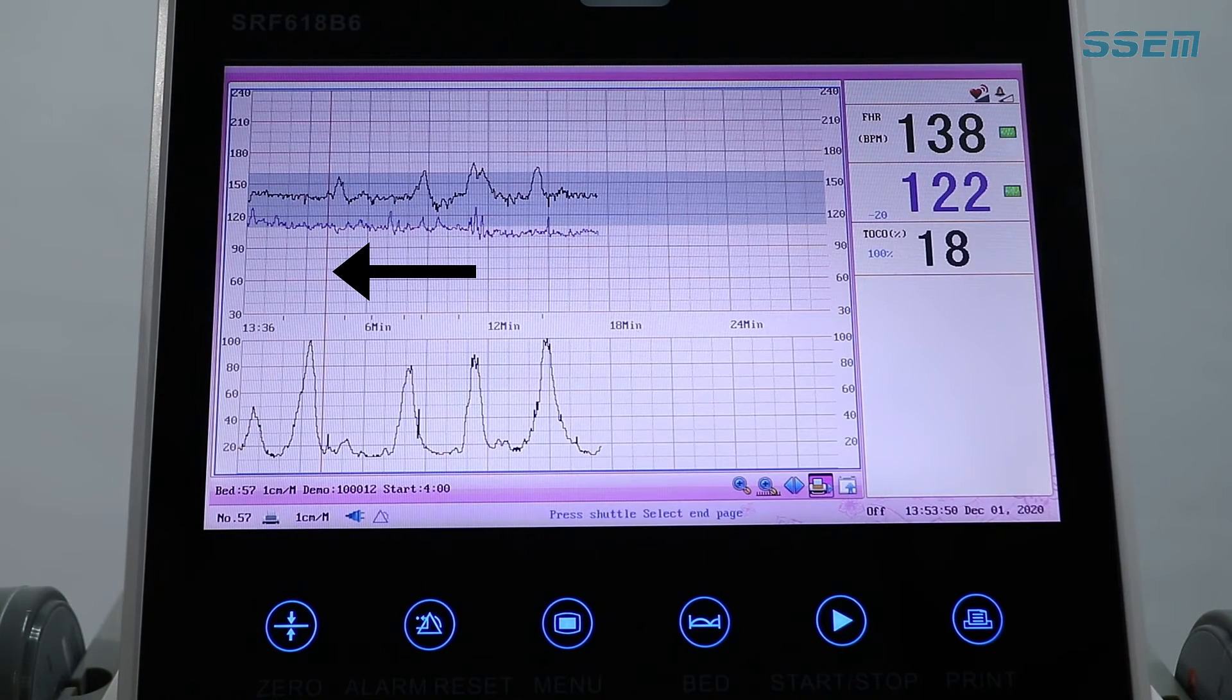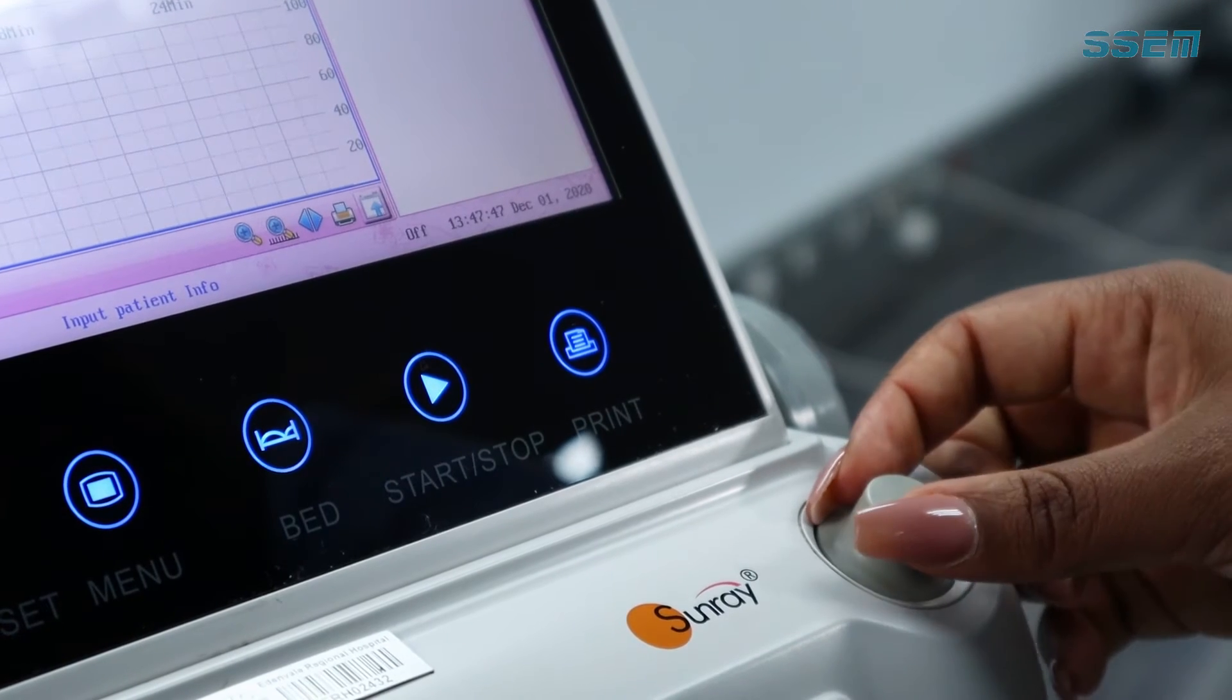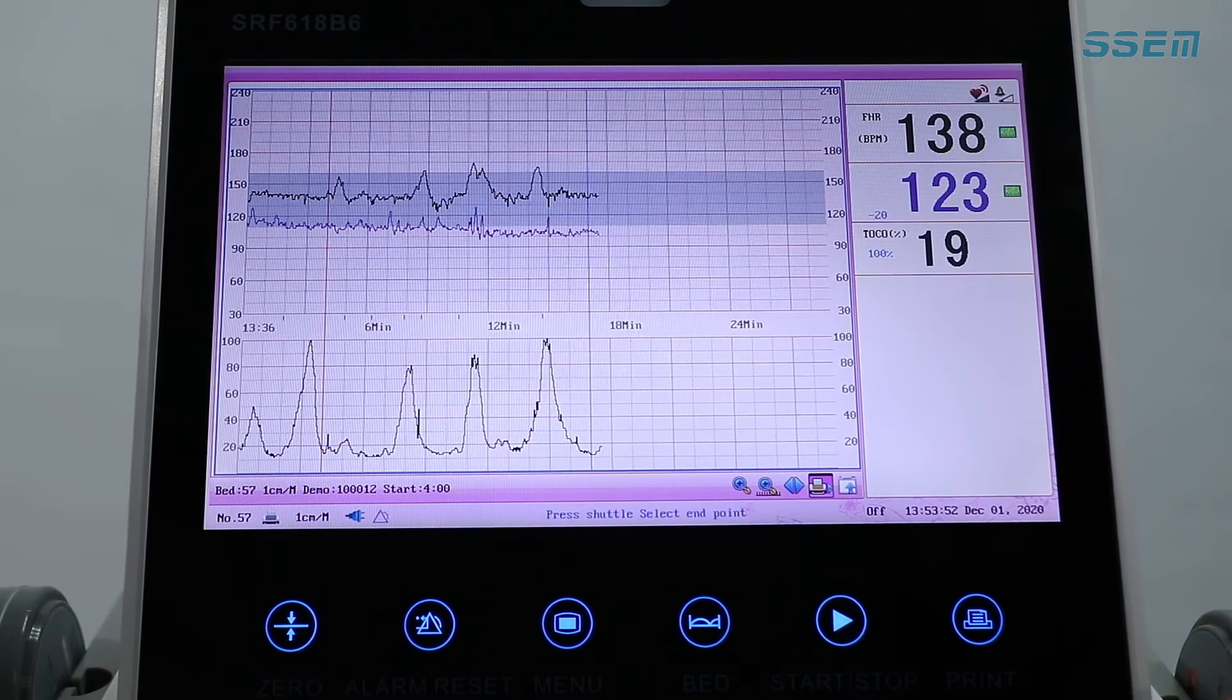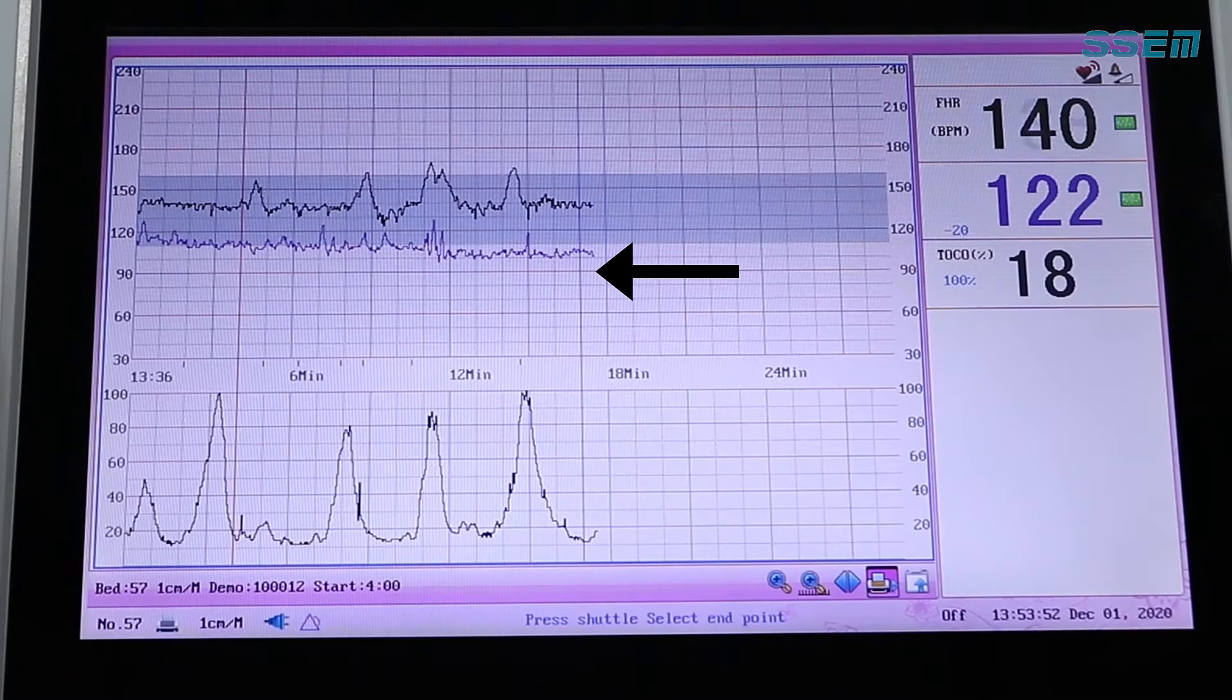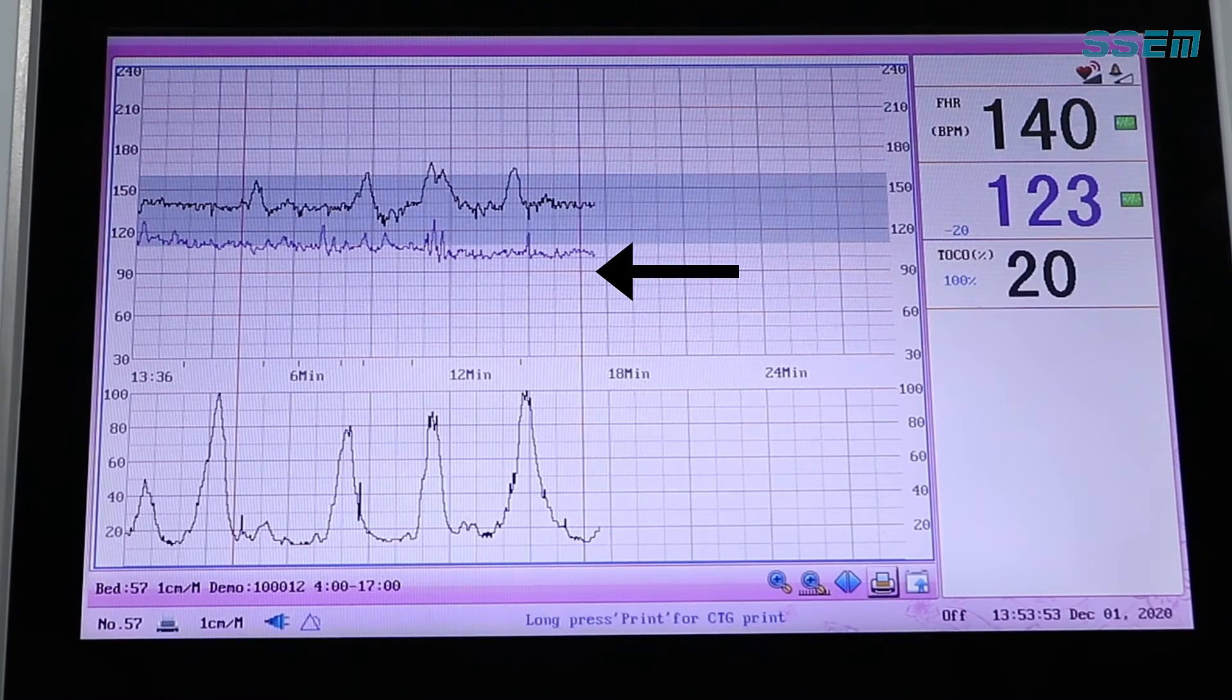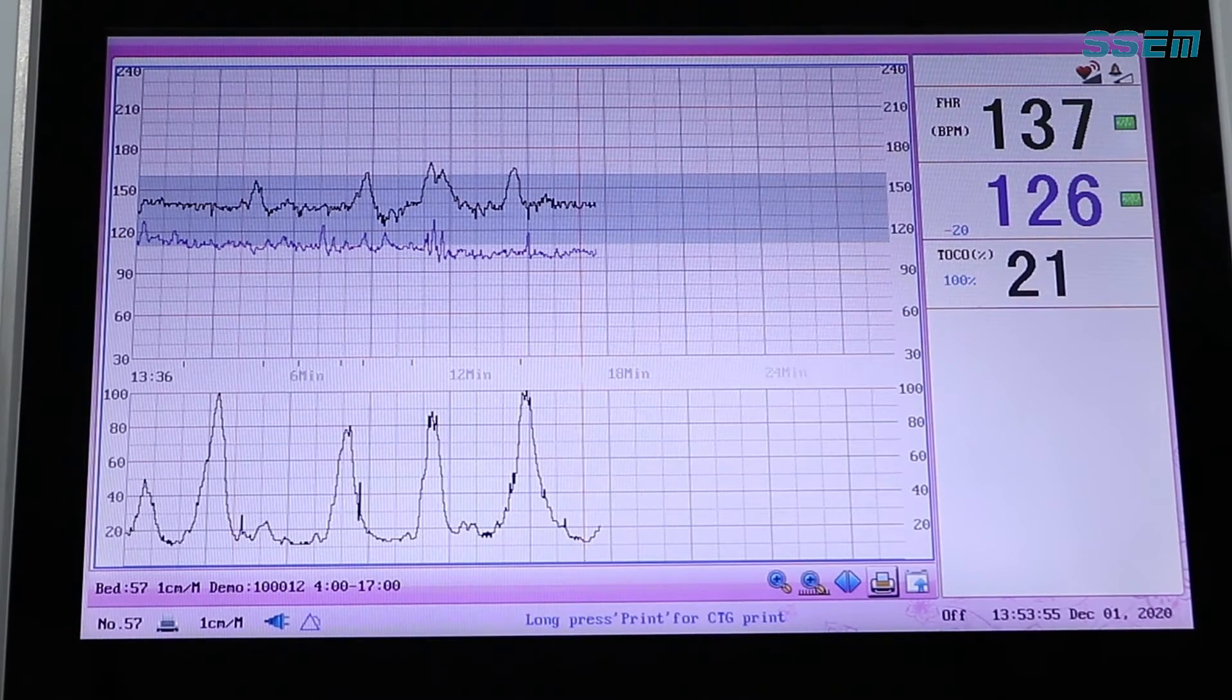Place the blue line where you would like the printout to start. Confirm with the control knob and the line will turn red. Click the control knob for a second time for the second line to appear. Place the line where you would like the printout to end and confirm.